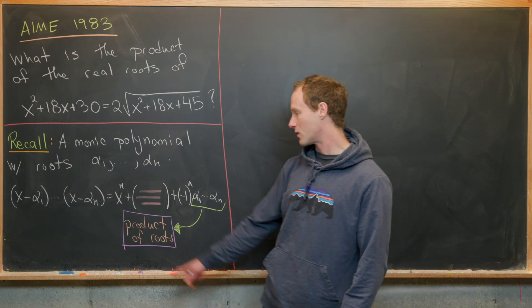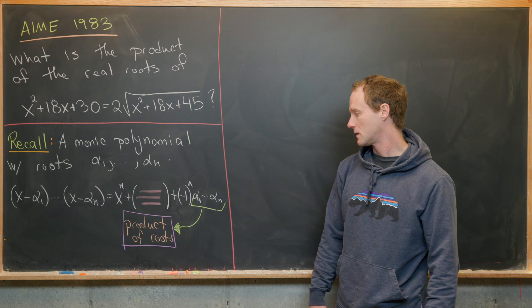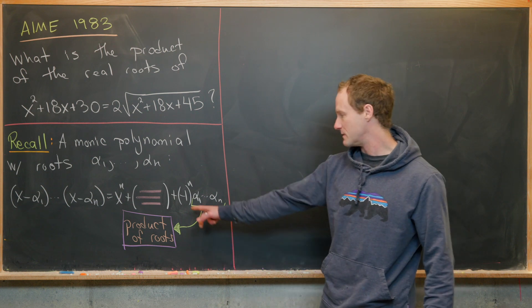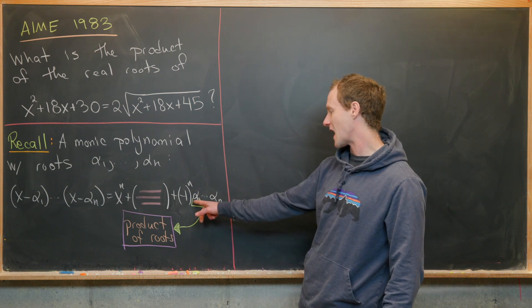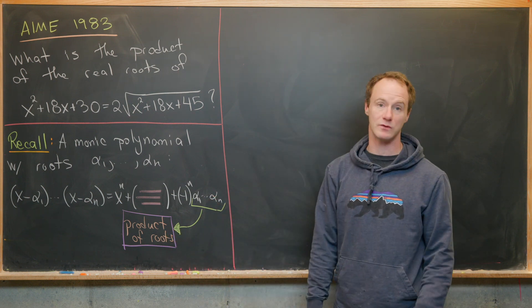But then if you multiply that out, you'll have xⁿ, a bunch of stuff in the middle, and then the constant term will be (-1)ⁿ times α₁ · α₂ · ... · αₙ. Notice that is the product of the roots.